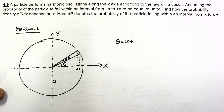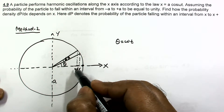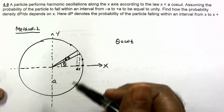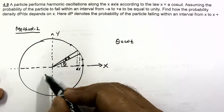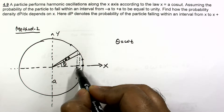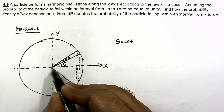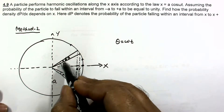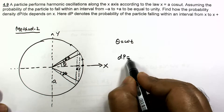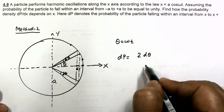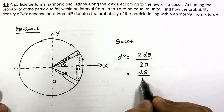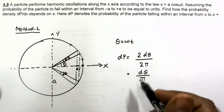After a small time the particle covers a small angle dθ, and for this dθ it crosses the required region dx — from x to x plus dx on the x-axis. To find the probability from this: in one full rotation the particle covers 2π, and the favorable angle is dθ. The particle crosses the dx region twice per revolution, so dp equals 2dθ divided by 2π, which gives dp equals dθ/π.